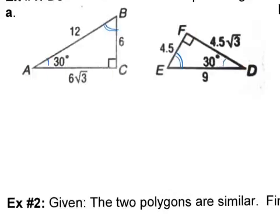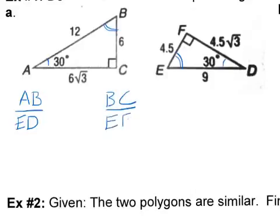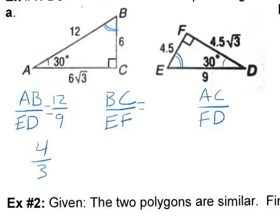Well, let's see if that's the case. Let's see if they're all proportional. So, let's take AB and let's put it over ED. Let's take BC and let's put it over EF. And let's, finally, let's take AC and let's put it over FD. Okay, well, AB is 12 and ED is 9. When you reduce that, you get 4 thirds. Okay. BC is 6 and EF is 4.5. When you reduce that, you get 4 thirds. So far, I'm seeing a pattern.